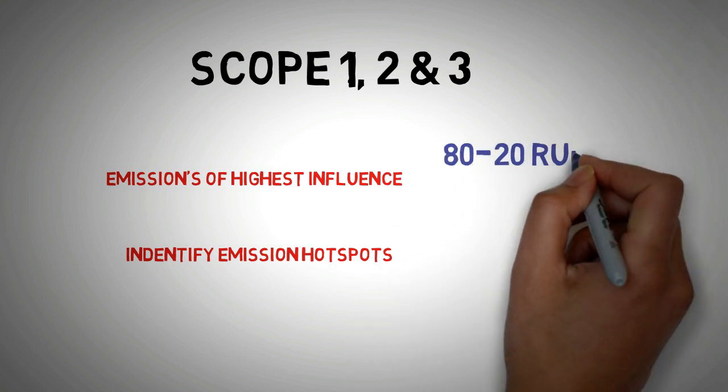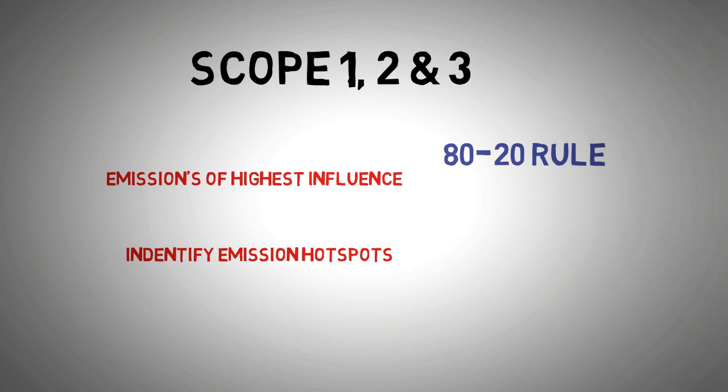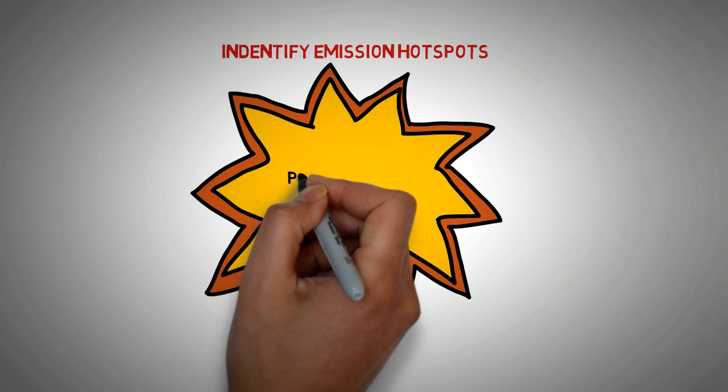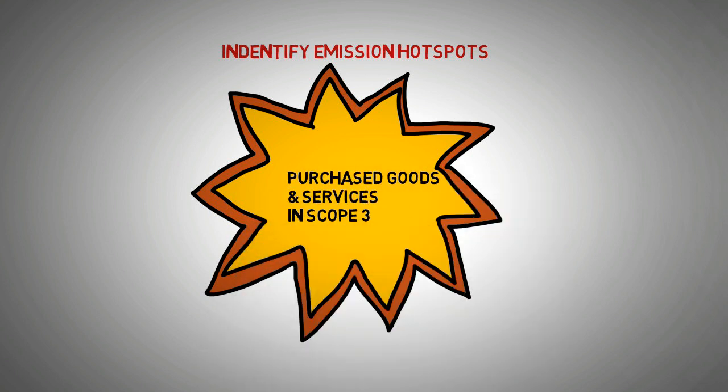It is very common to have the 80-20 rule even in the case of GHG emissions. That is, 20% of the organization's activity may result in 80% of its emissions. Experts have suggested that it is often the purchased goods and services in the Scope 3 category that account for the highest emissions.